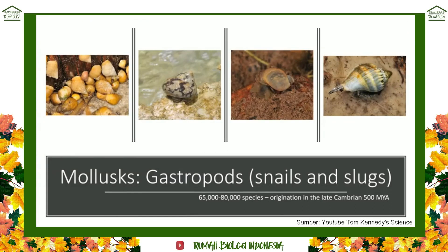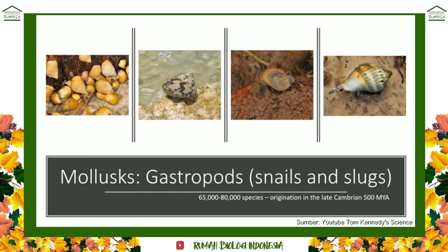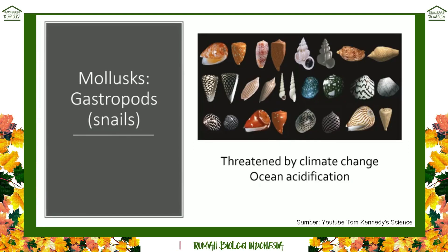One of the most commonly seen mollusks are snails. Gastropods are found on land, in freshwater, in marine environments, and all along the beach edge down to the depths of the ocean — they're found almost everywhere in the world. They range in size from tiny little things to enormous specimens weighing around 10 pounds, and there are about 65,000 to 85,000 species of gastropods.